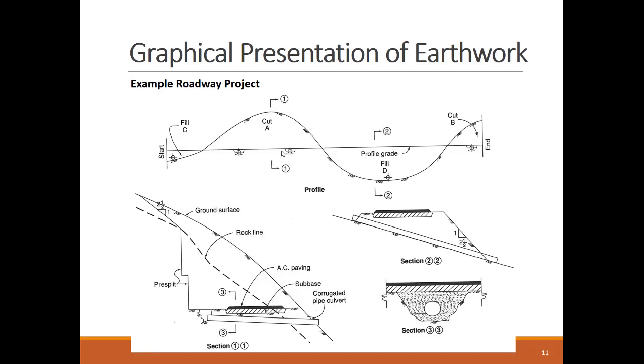On the other hand, section 2-2 is made in a filled segment of the road, which also has a corrugated pipe culvert.